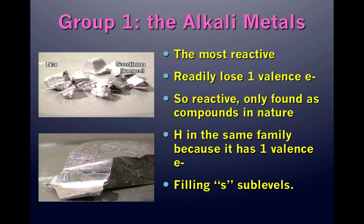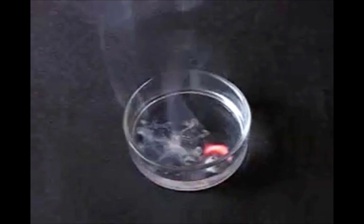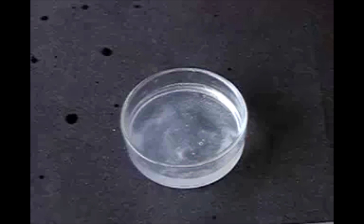The reason hydrogen is in the same family as the alkali metals is not because it's a metal, but because it has one valence electron. The alkali metals are filling S sublevels. In the demonstration, a piece of sodium dropped in water shows how sodium readily loses its one valence electron to water, forming hydrogen gas.